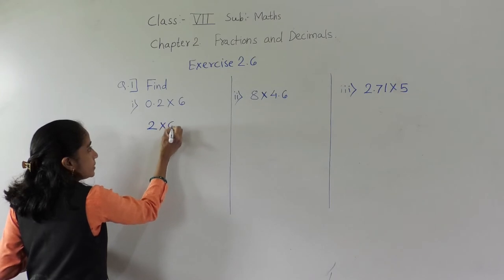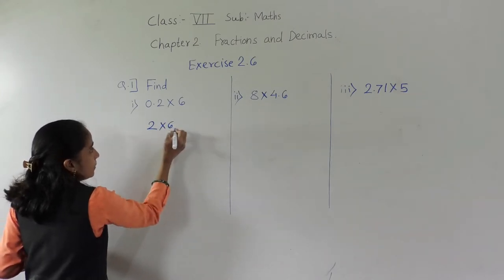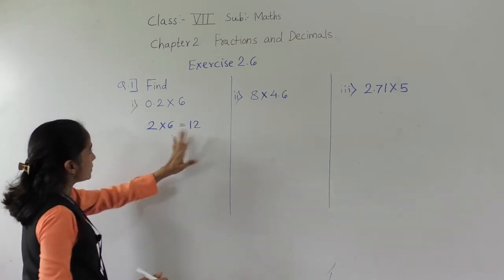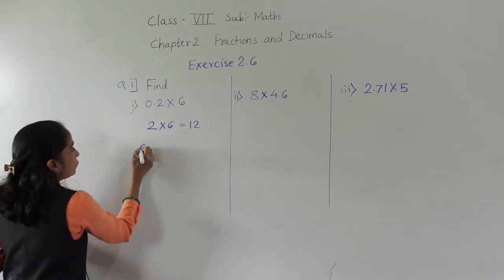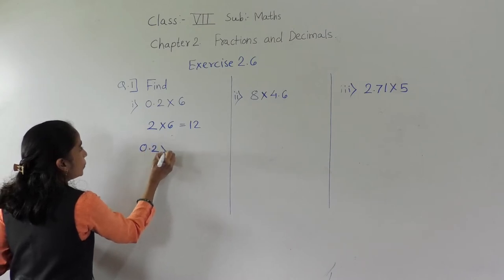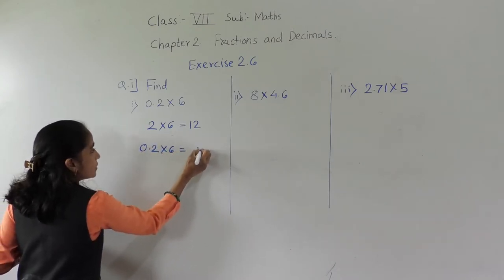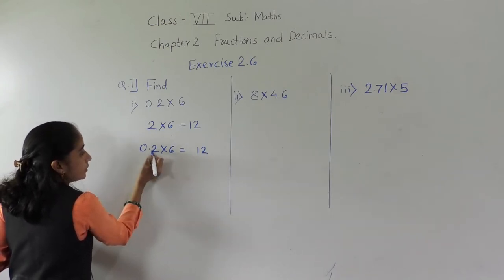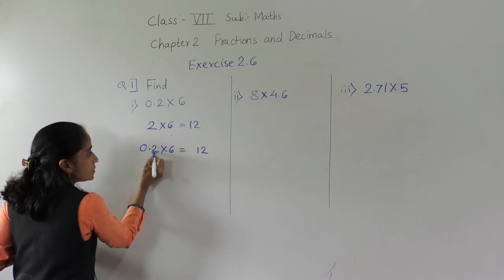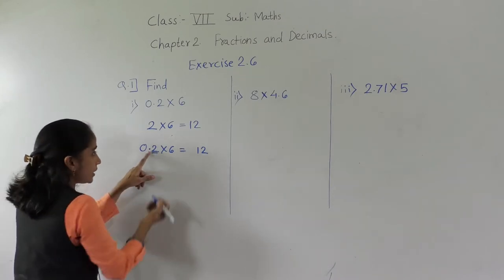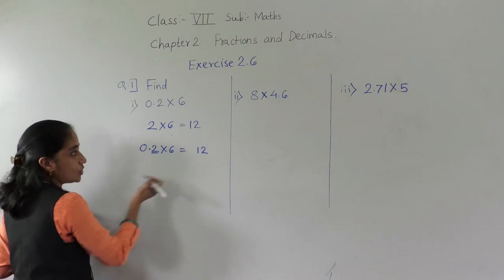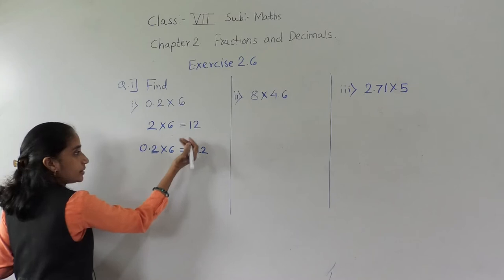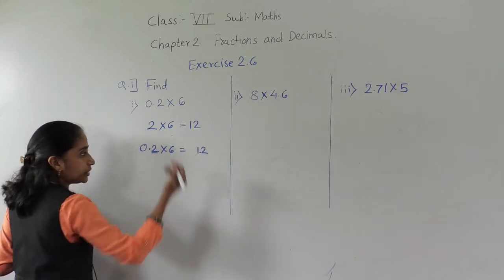2 multiplied by 6, what we are getting? Answer is 12. So if you write 0.2 multiplied by 6, we got 12 without the decimal. Now, after the decimal point there is 1 digit, so from the right-hand side count 1 digit and give the decimal point before it.